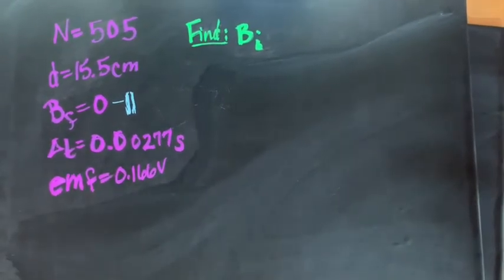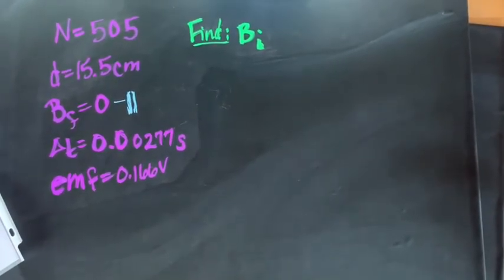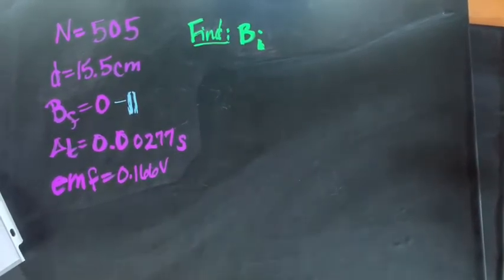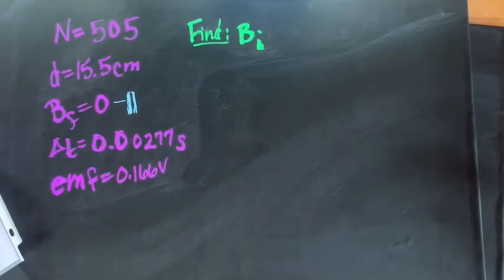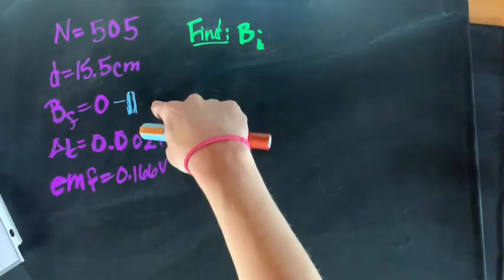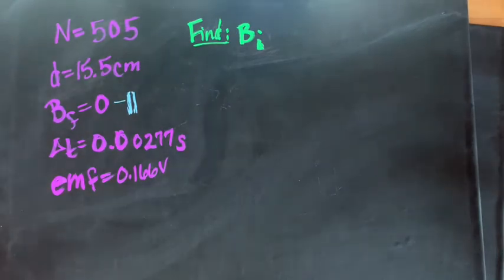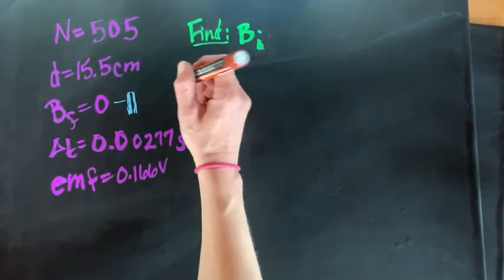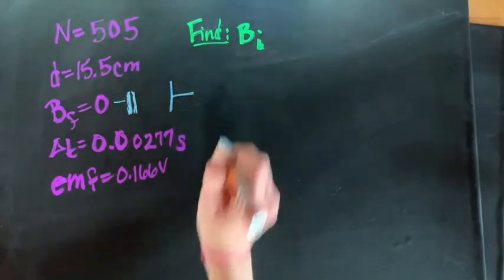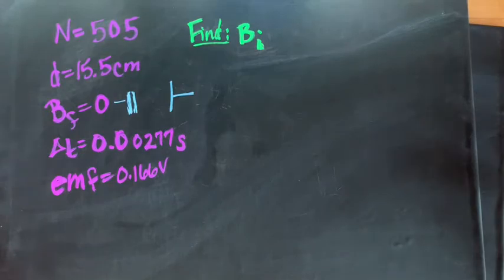So we're going to do number 13. A 505 turn circular loop coil with a diameter of 15.5 centimeters is initially aligned so that its plane is perpendicular to earth's magnetic field. So when it's perpendicular, it's got an induced current. In 2.77 milliseconds, the coil is rotated 90 degrees so its plane is parallel. At this point when it's rotated so its plane is parallel, our magnetic field is zero. If the average EMF of 0.166 volts is induced in the coil, what is the value of earth's magnetic field? We're looking for that magnetic field when our loop is oriented to where it's perpendicular to earth's magnetic field.